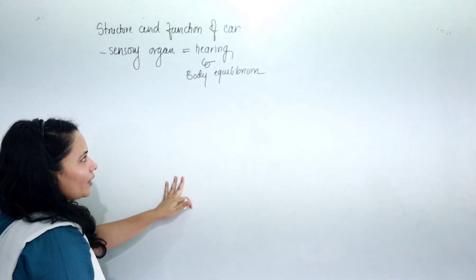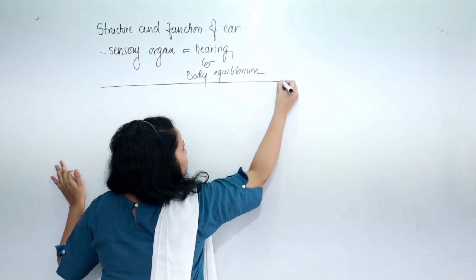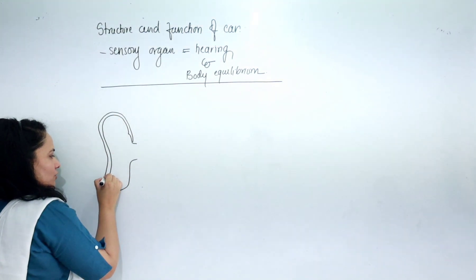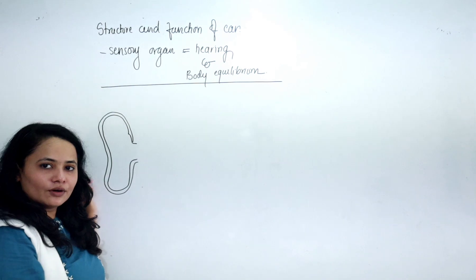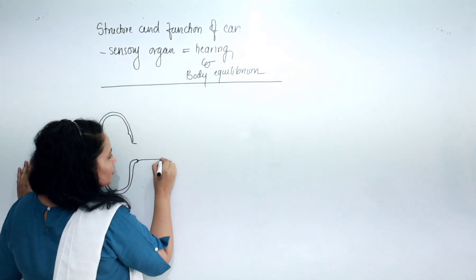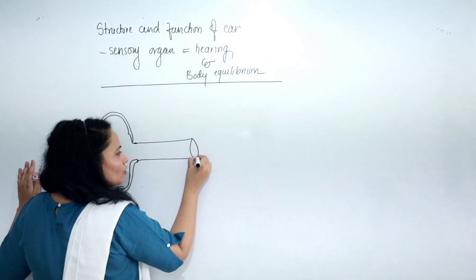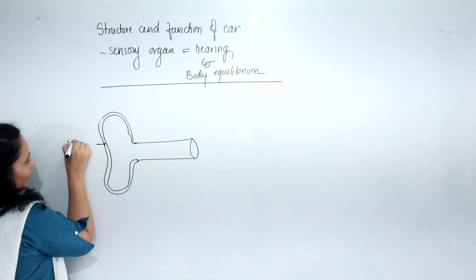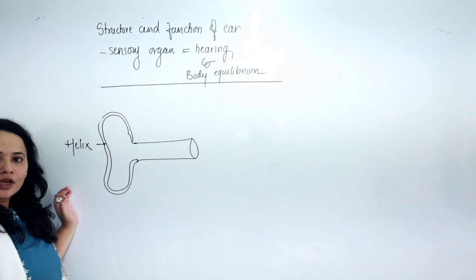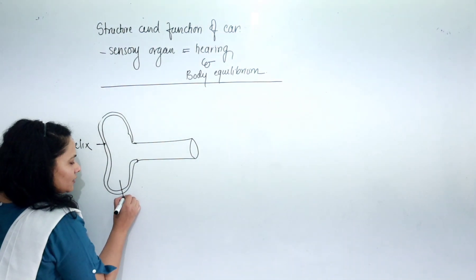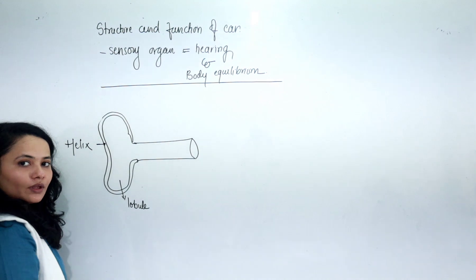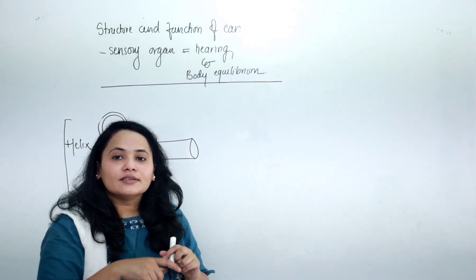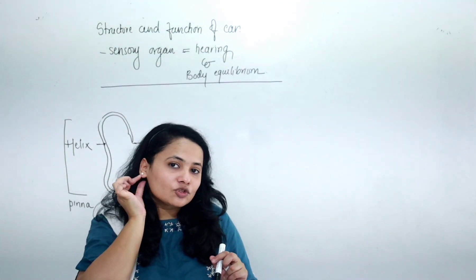Let us begin with the structure of the ear. The ear is ideally divided into three main structures: the external ear, the middle ear, and the inner ear. The external ear includes folds known as the helix, and the lower fleshy part is known as the lobule. This whole structure is known as the pinna.